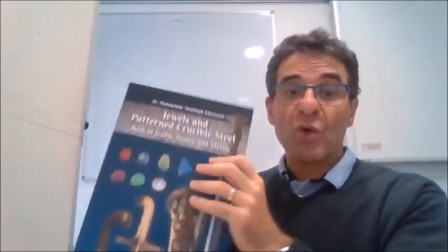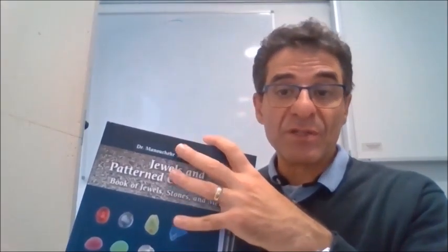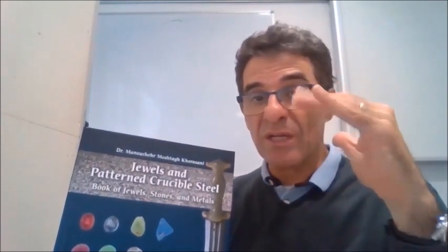This book shows also very good examples of swords, sabers from Iran, from India, from Ottoman Empire, and also exceptional daggers from these countries. So you can take a look at them. They're really, really beautiful.